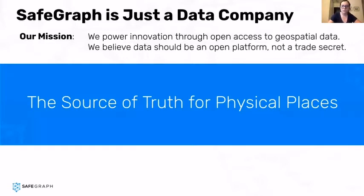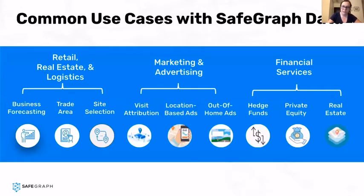At SafeGraph, we are just a data company. Our sole focus is curating physical places data and making it accessible to others, whether through delivery mechanisms or through appending PlaceKeys to all of our data to make it easier to join to other datasets. We don't sell visualization tools — just rows and columns of data that can then help you make some really cool visualizations or run some really interesting analytics. Because of that laser focus, we can provide places data for whatever your use case may be, and really, everything has a geography, so points of interest data can be applied across industries and use cases.